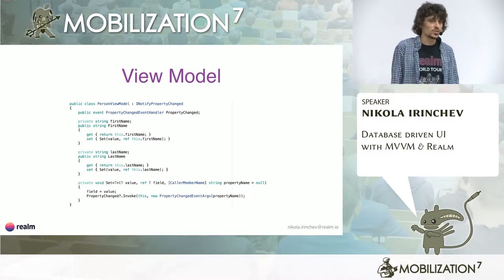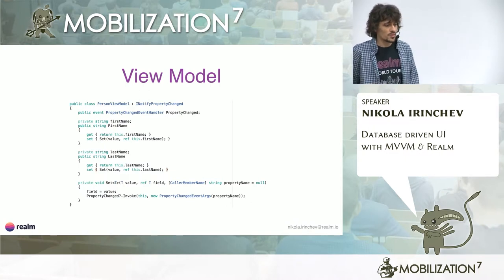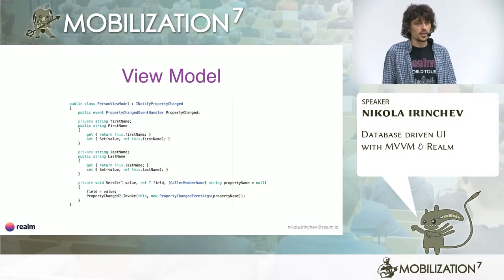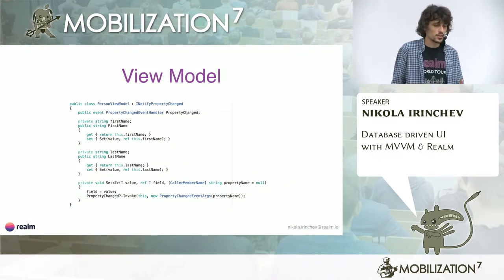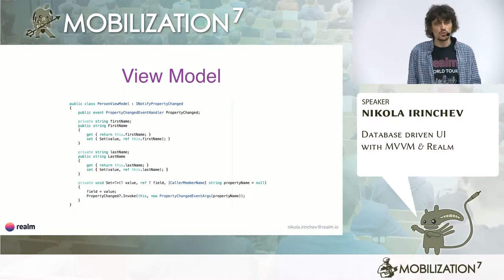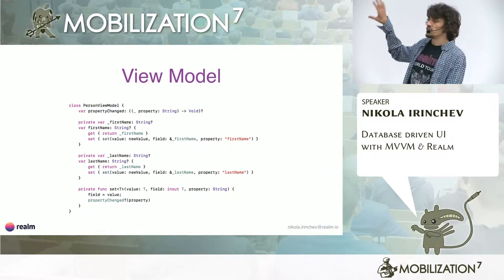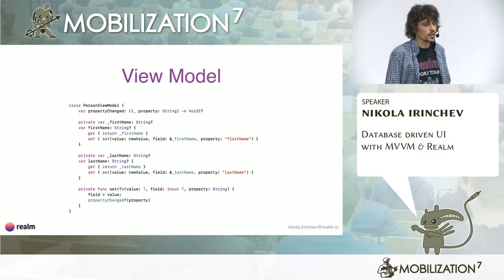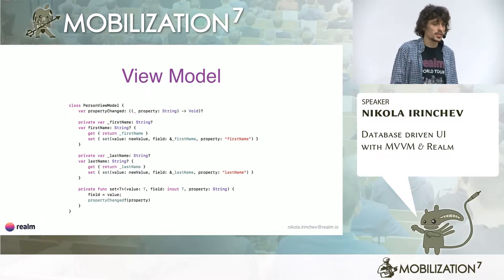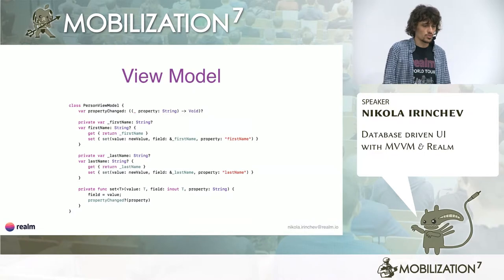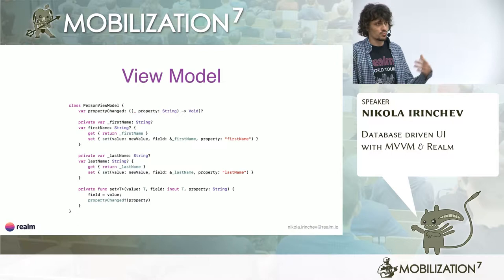Finally, we get to view models — the holy grail, and the component that nobody seems to agree on. Coming from a .NET background, for us, view models are responsible for massaging the models in a way that can be consumed by the view. This can be done by combining data from several different models, or converting data in the model to a view-consumable format — for example, converting boolean properties to colors, or string paths to images. View models can also contain commands that the view can invoke, such as when saving or deleting items or changing a value in response to pressing a button.